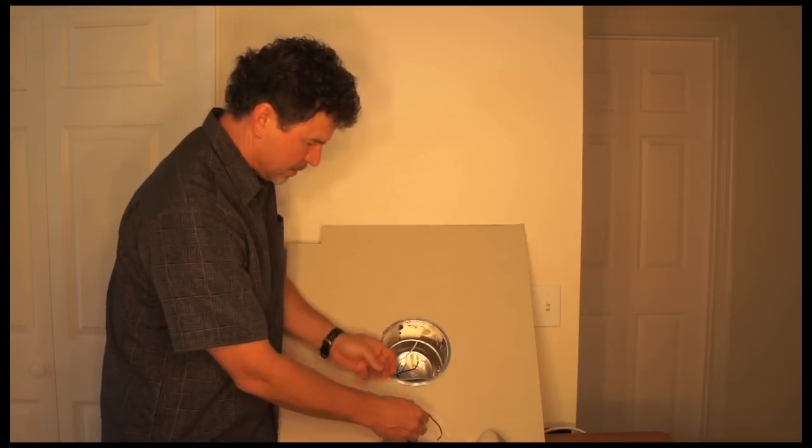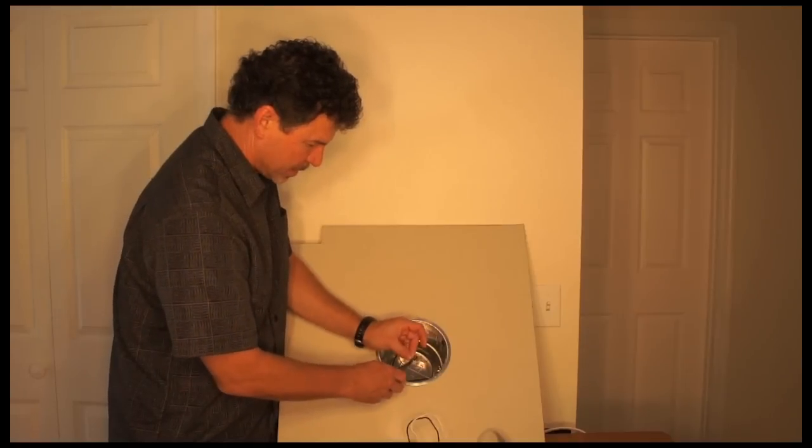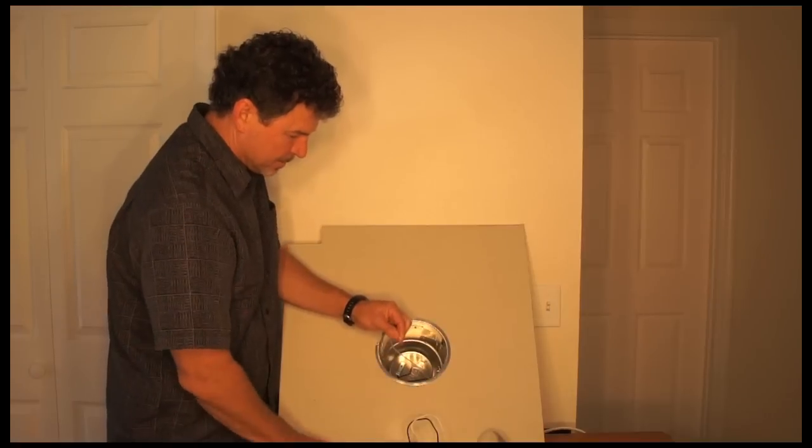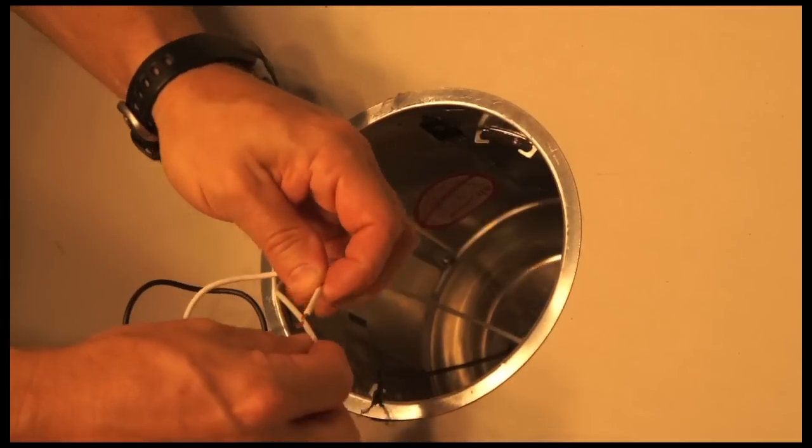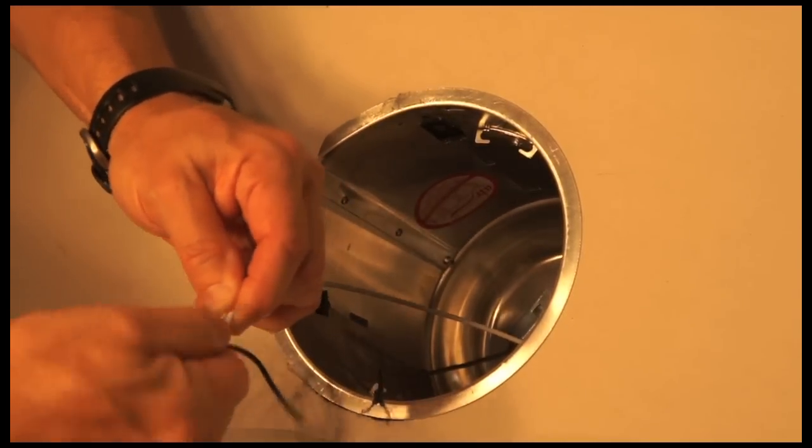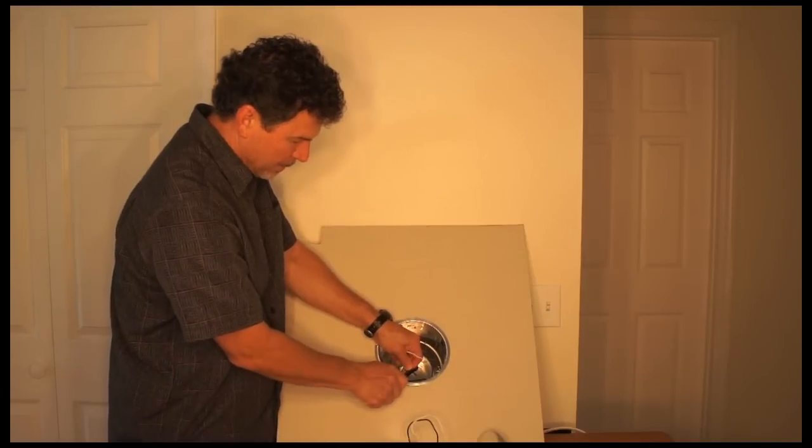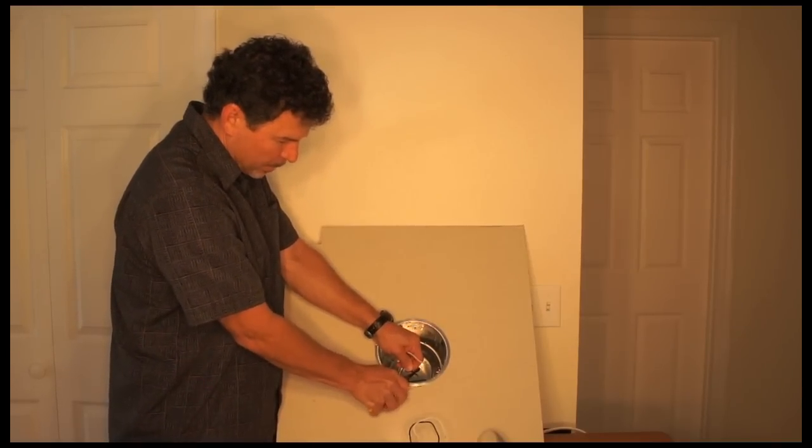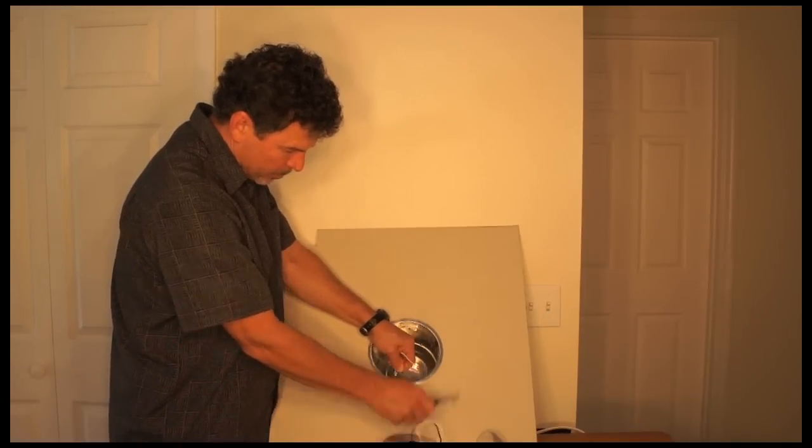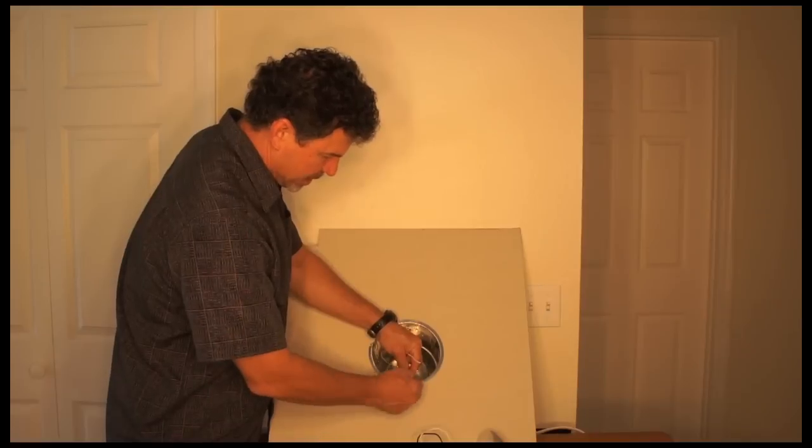Now I'm going to strip the incoming power, which is my white wire. These are stranded wires, so I'm going to twist them together. I'm going to do the same with the black and twist them together.